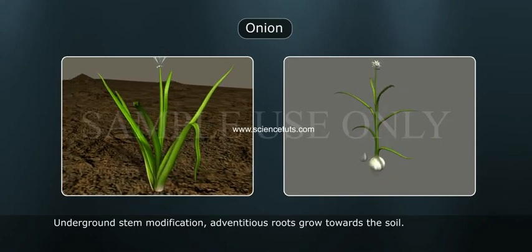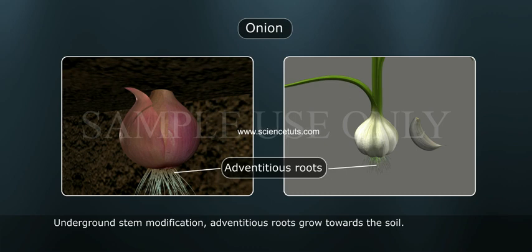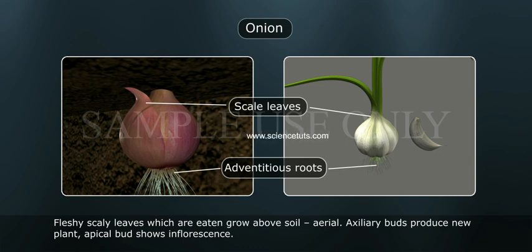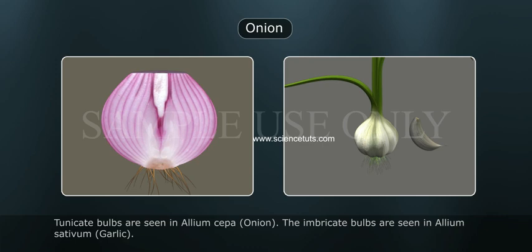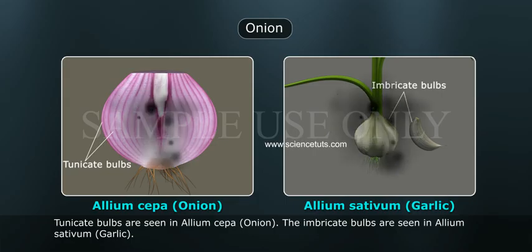Onion is an underground stem modification. Adventitious roots grow towards the soil. Fleshy, scaly leaves which are eaten grow above the soil (aerial). Axillary buds produce a new plant, and the apical bud shows inflorescence. Tunicate bulbs are seen in Allium cepa (onion), while imbricate bulbs are seen in Allium sativum (garlic).